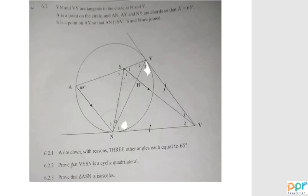S is the point on AY such that UAN is parallel. Connecting S and N are joined. OK.